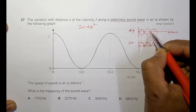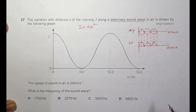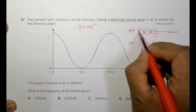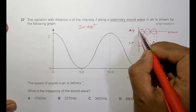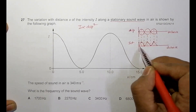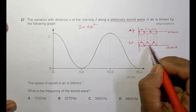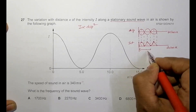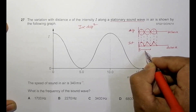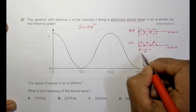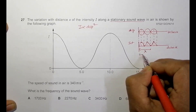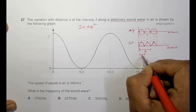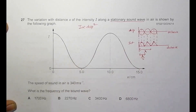Lambda is the distance from one node to the equivalent point two nodes away — that full cycle distance is lambda. So from here to here it is lambda, meaning the distance from one intensity maximum to the next equivalent point is lambda. Therefore, the distance between two adjacent intensity minima is lambda by 2.